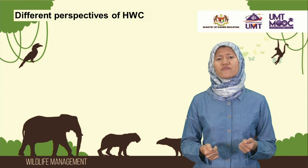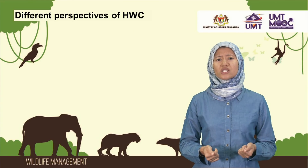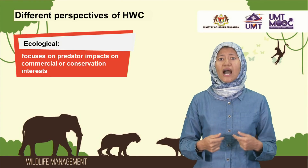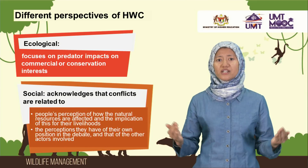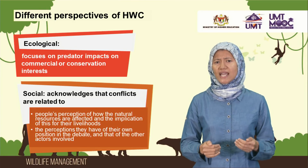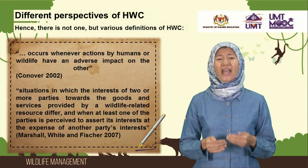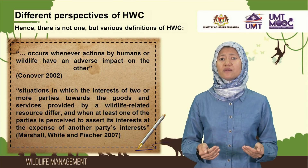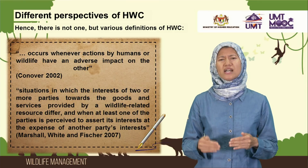Why? This is because of the different perspectives that people have on conflicts, where the ecological perspectives often focus on the impact of predators on our interests, either of commercial or conservation value. The social perspective, however, is broader, as the relationship between people's perception on natural resources, livelihoods and their position or stake in the debate are also acknowledged. The result? There are actually many definitions on human wildlife conflict. Try googling up the terms and you will find more than a handful, from simple to those that require a bit of thinking.